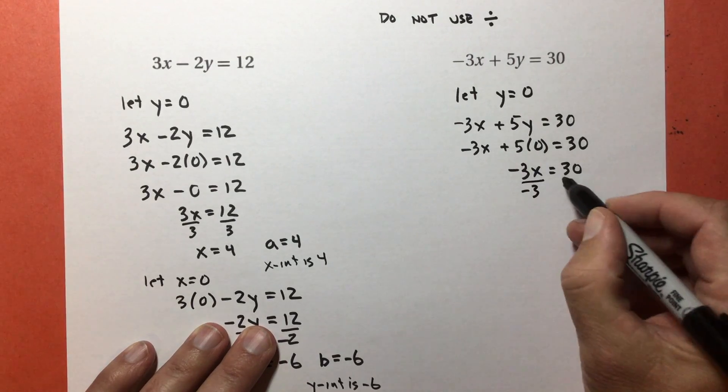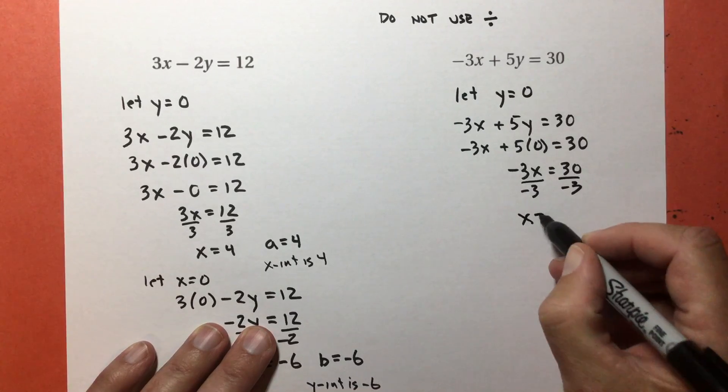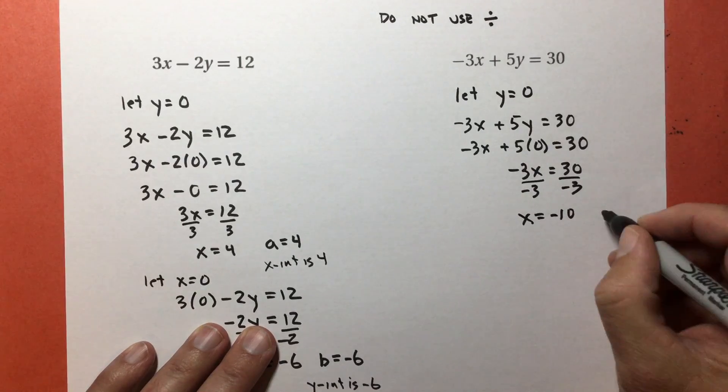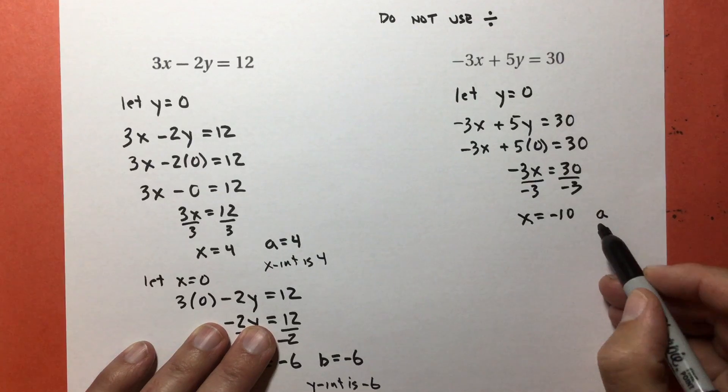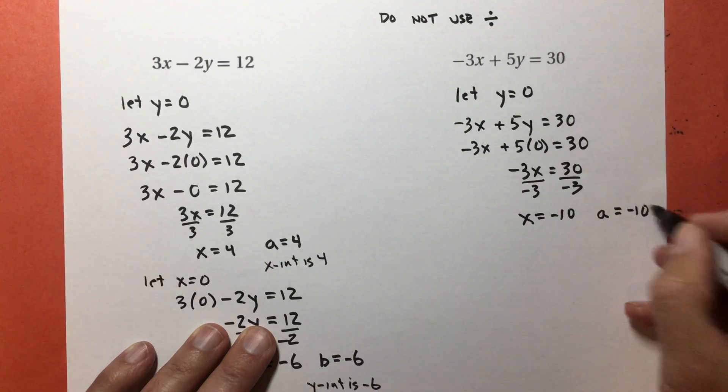The opposite of multiplying by negative 3 is divide by negative 3, and I get x equals negative 10. So my x-intercept, which is named A, is negative 10.